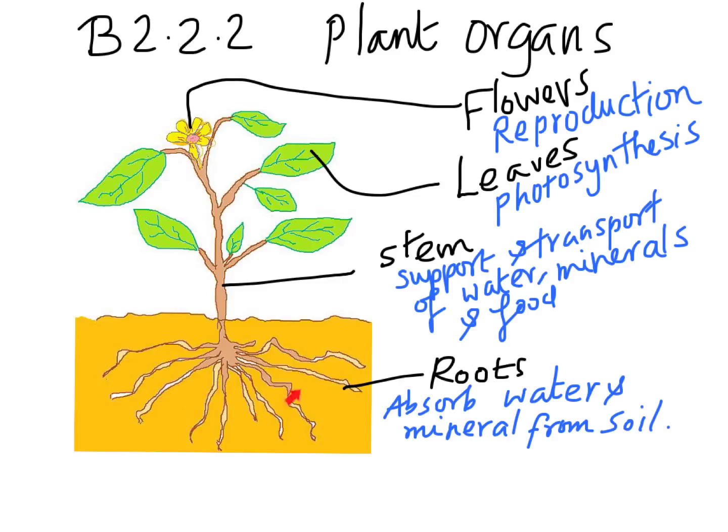The root is another example of an organ. It has a specific function and is made up of different types of tissues. We are going to be specifically focusing on the leaf as an organ and how that organ is made up of tissues, which are in turn made up of similar types of cells.